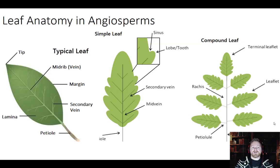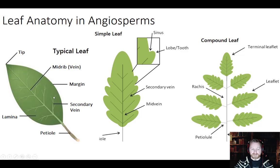So the next couple of slides go on to some descriptive terms — this is the anatomy of leaves and angiosperms. Here is a typical leaf. Here is the same leaf again, labeled as a simple leaf versus compound. You have the tip, the base, the margins, the midrib, which is the main vein, the secondary veins, and the lamina, which is the actual leaf in between. The little piece that holds this to the stem is called the petiole. This slide also gives you the tooth or the lobes and the sinus on the margins. These are both simple leaves.